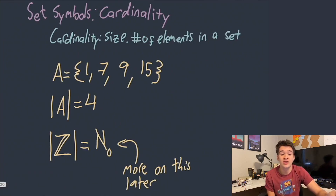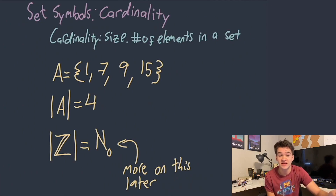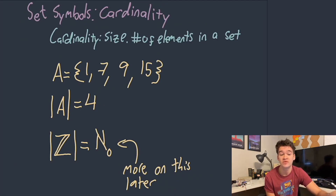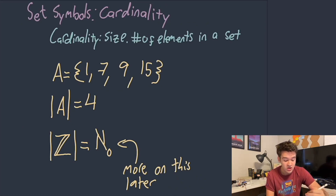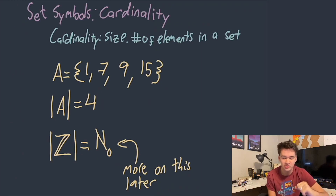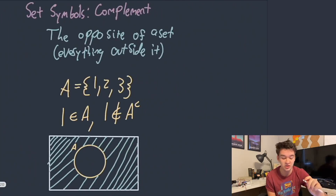The next thing we're going to talk about is cardinality. Cardinality is just a representation of the size of a set — how many elements are in the actual set. For example, here we have this set called A which has four elements in it, so the cardinality of A, which we represent the same way as absolute values in normal mathematics, is going to be four. The cardinality of the integers we'll get into more at the end of this video — you might just think that's infinity, but we can actually be more specific and call it Aleph zero, but we'll get back to that in a little bit.